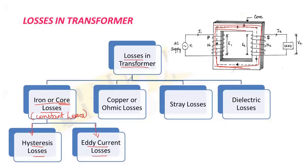Another type of loss is called copper or ohmic losses. These losses take place in the windings of the transformer — the two windings, the primary and the secondary, which are made up of copper. The losses in them are called copper or ohmic losses, and these losses are variable in nature as they depend upon the current in the primary and secondary winding.